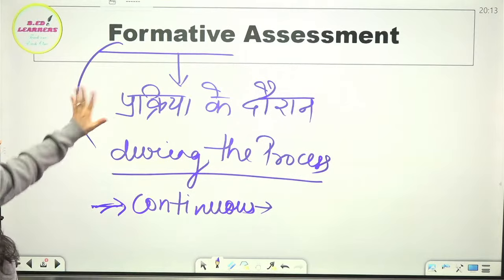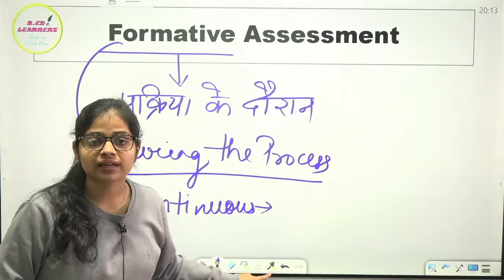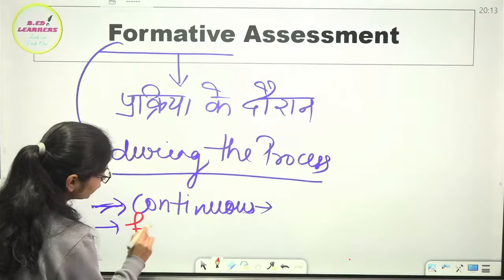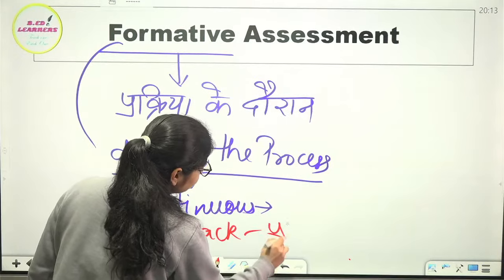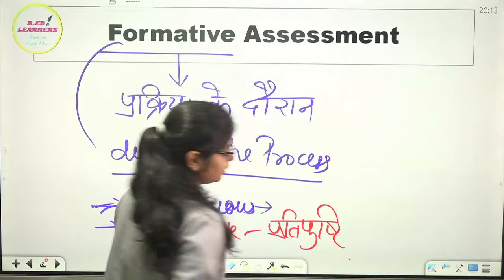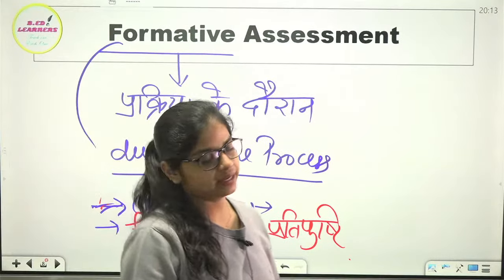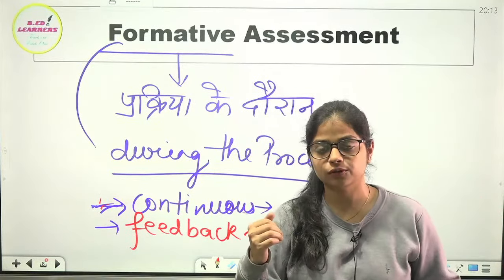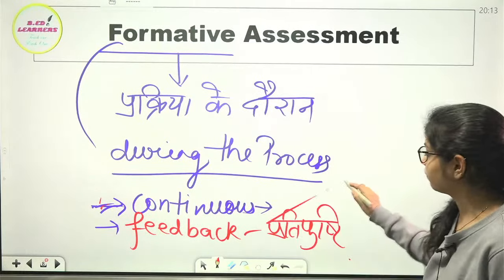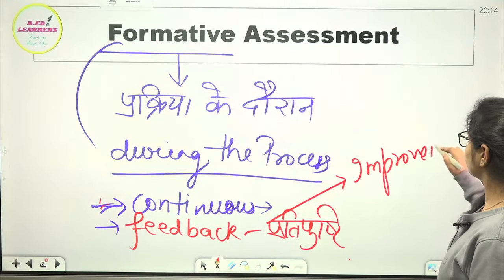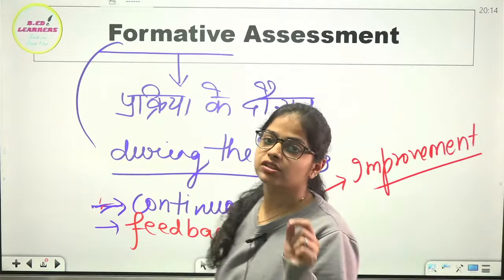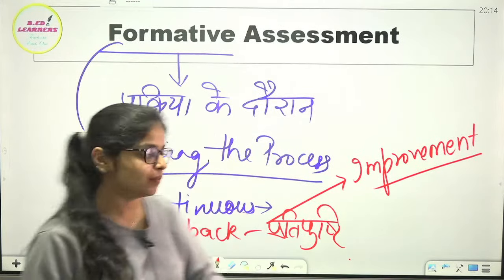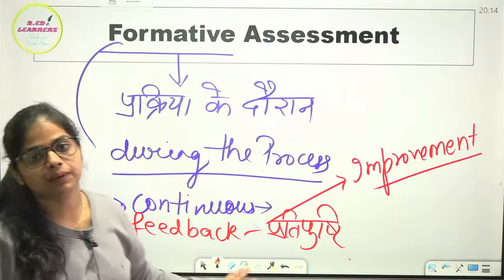Very good Nisha — this will be your formative assessment, which keeps running continuously. When there is continuous assessment, we get continuous feedback. We keep getting Prati Pushti (feedback) continuously. Feedback means the teacher keeps telling you about your mistakes — where you are going wrong. Because if you continuously get feedback, there are more chances that you will make proper improvement. So formative assessment happens during the process, it is continuous, and alongside we keep getting feedback.